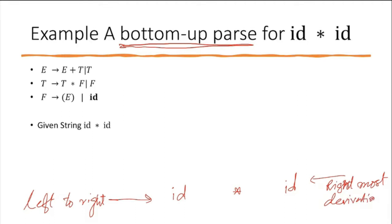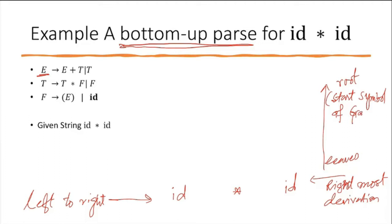While moving from leaves to root, what will be at the root? Definitely the start symbol of the grammar — in this case, E. So the root is always the start symbol of the grammar. We read left to right and based on what we read, we take decisions. Reading from left to right, we read id first, and on this id we will do a rightmost derivation.